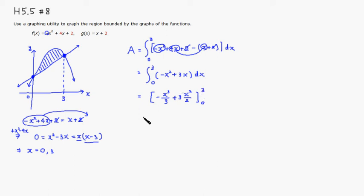Then, so plug in 3. If you plug in 3, 3 cubed is 27, divide by 3 is 9, so it's going to be negative 9 here. Plug in 3 here, so it's going to be 3 times 9 over 2, so plus 27 over 2. Minus, plug in 0, that's 0, plus plug in 0, so that's 0.